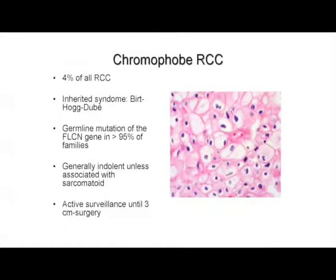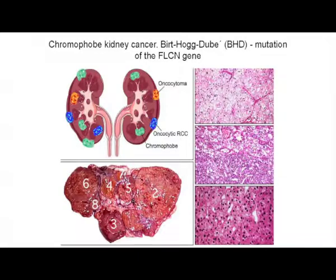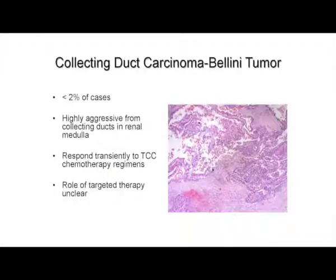Chromophobe carcinoma represents 4 to 5% of all renal cancers. The inherited syndrome is Birt-Hogg-Dubé, and the germline mutation is in the FLCN gene in more than 90% of families. These are generally indolent tumors unless they're associated with sarcomatoid features. We speak about a slower growing tumor — active surveillance until three centimeters, then surgery. With FLCN gene mutations, you can see oncocytomas, oncocytic renal cell carcinomas, and chromophobe tumors — all very different tumors.